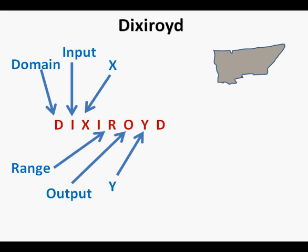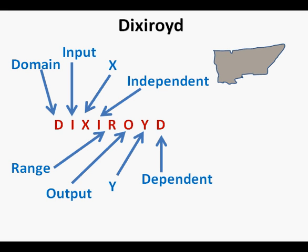And the fourth letter I represents independent, as in the independent variable or input variable. And the last letter D stands for dependent, as in the dependent variable or output value.